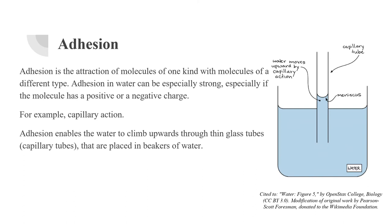Water likes to stick to itself, but under certain circumstances it actually prefers to stick to other types of molecules. Adhesion is the attraction of molecules of one kind for molecules of a different kind, and it can be quite strong for water, especially with molecules bearing positive or negative charges. For instance, adhesion enables water to climb upwards through thin glass tubes called capillary tubes placed in a beaker of water. This upward motion against gravity is known as capillary action. Capillary action depends on the attraction between water molecules and the glass walls of the tube — adhesion — as well as interactions between water molecules themselves — cohesion.